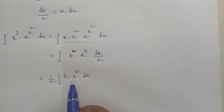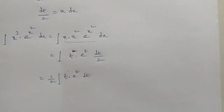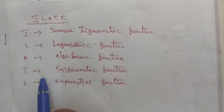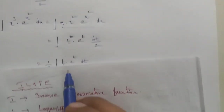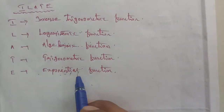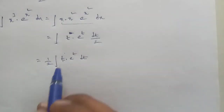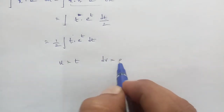We apply the ILATE rule to choose u and dv. ILATE stands for: I - inverse trigonometry, L - logarithm, A - algebraic, T - trigonometry, E - exponential. Here t is an algebraic function and e to the power t is an exponential function. So by ILATE, u is equal to t and dv is equal to e to the power t dt.